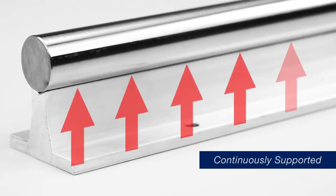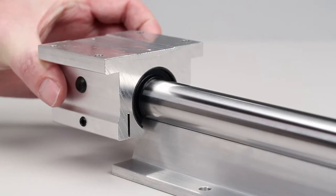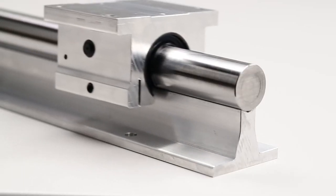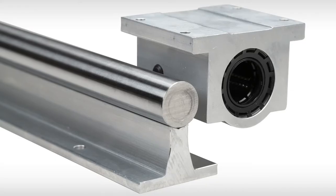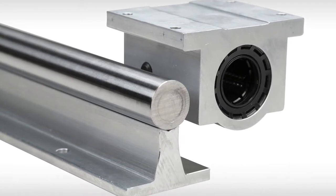Continuously supported shafts are attached and supported along their entire length. This configuration is used when loads are high or more rigidity is desired. They require open bushings or recircular linear roller bearings to be used as the support would be in the way of a closed linear bearing.